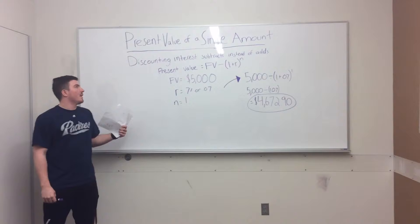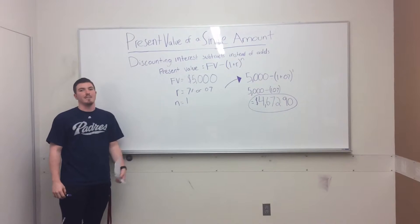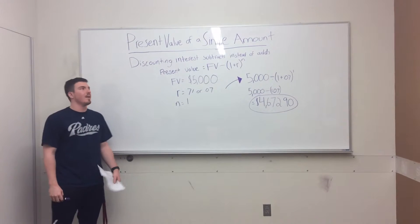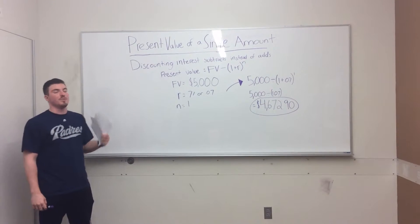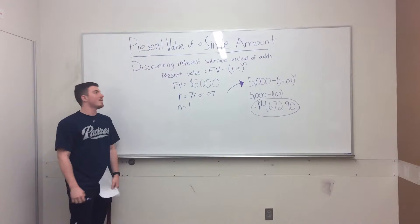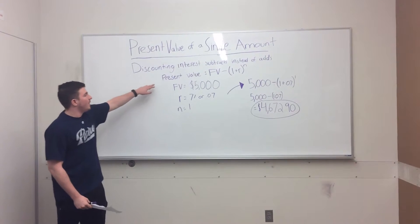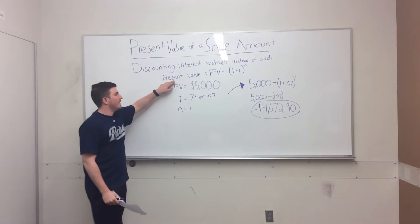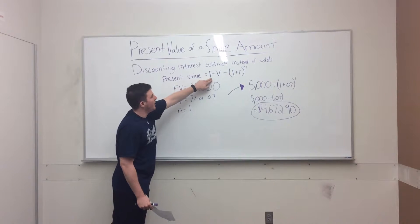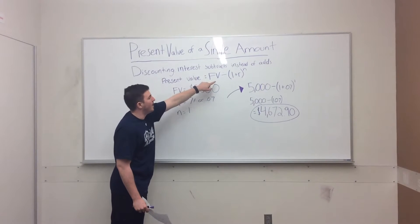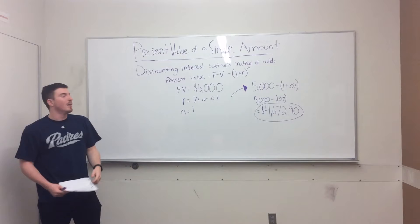Unlike when you're finding the future value, this time you're going to have a force called discounting interest, where your interest is going to be subtracting instead of adding to your amounts. To find the present value, you find your future value divided by one plus your rate to the n power.